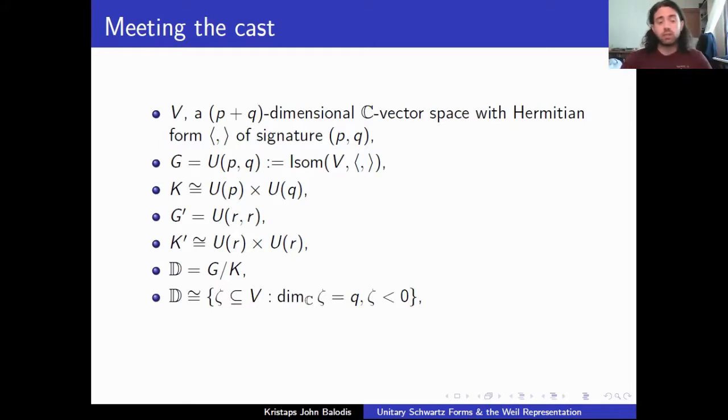It turns out, actually, this manifold D has a very convenient model. So if you've seen Grassmannians or projective space before, it shouldn't be shocking to you that the collection of q-dimensional subspaces that are negative definite also forms a manifold. And in fact, in this case, it's equal to D. I mean, just as a believability, you would hope that if there's some justice in the world, if G is the full isometry group of this vector space, you would hope that it could act transitively on subspaces of a fixed dimension.